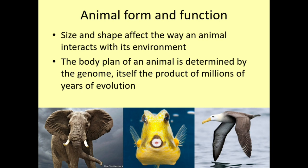Animals have evolved to survive in different habitats under different environmental pressures. We see very different animals — an elephant, a boxfish, an albatross — that have evolved to live in very different habitats. With very different environmental pressures on them, they have evolved very different structures to carry out very different functions. We'll investigate some of these in the coming sessions.